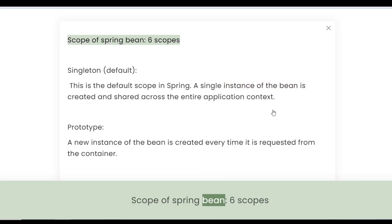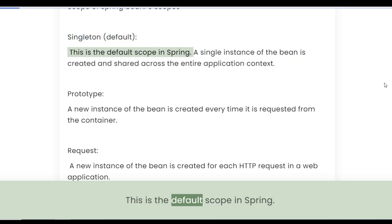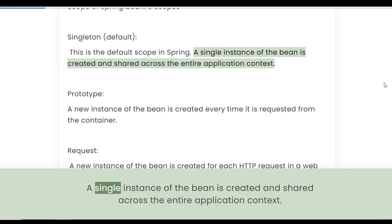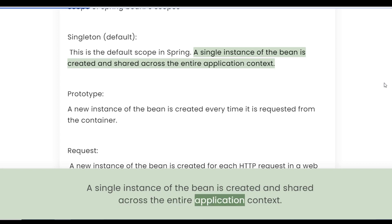Scope of Spring Bean — 6 scopes. Singleton: This is the default scope in Spring. A single instance of the bean is created and shared across the entire application context.